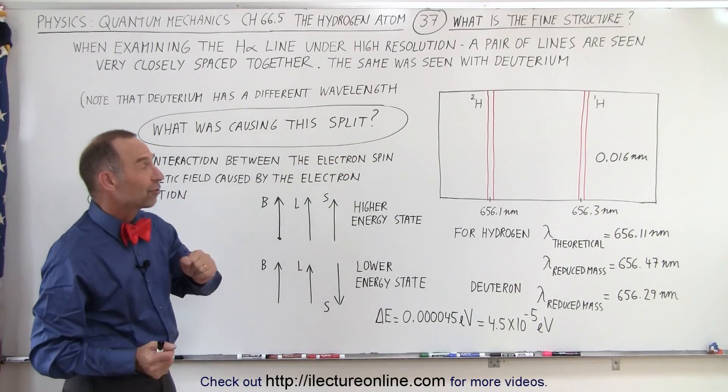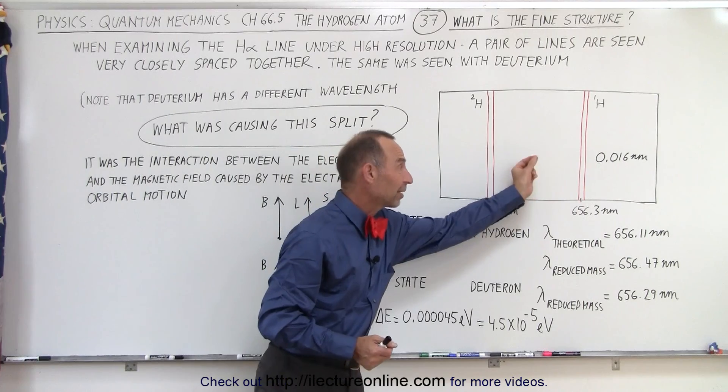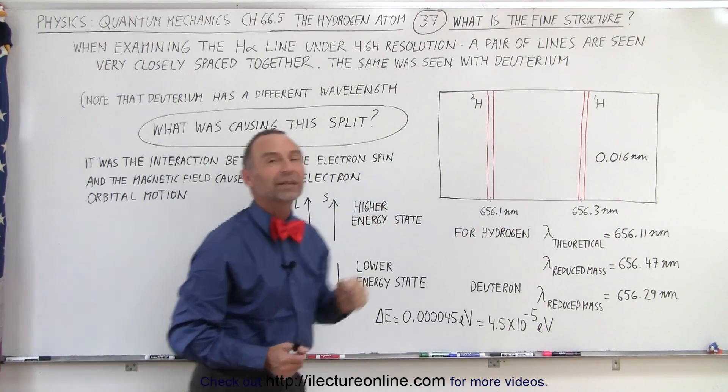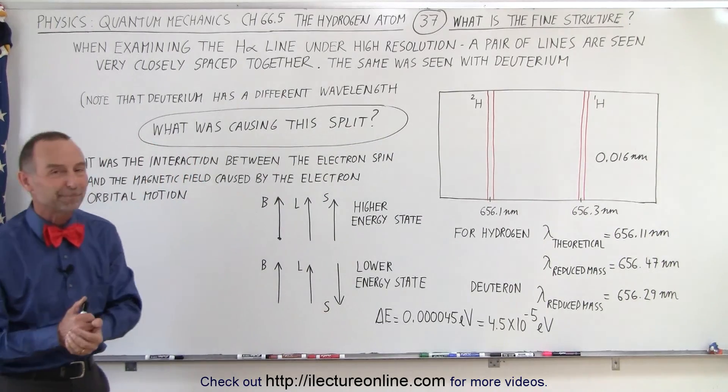That's what we mean by the fine structure. The fine structure is the fact that you see a very small differentiation in the lines there caused by this interaction. That's how we know.